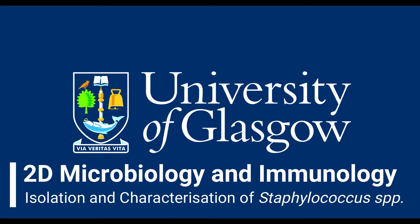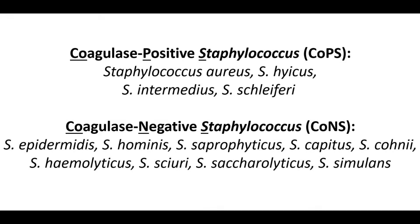The coagulase test is used to differentiate species of Staphylococcus that produce coagulase, or Staphylase, from those that do not. Coagulase is a fibrinogen cleaving enzyme that results in the formation of fibrin clots. Coagulase positive Staphylococci include the pathogen Staph aureus, and the coagulase negative Staphylococci include the commensals Staph hominus and Staph epidermidis.